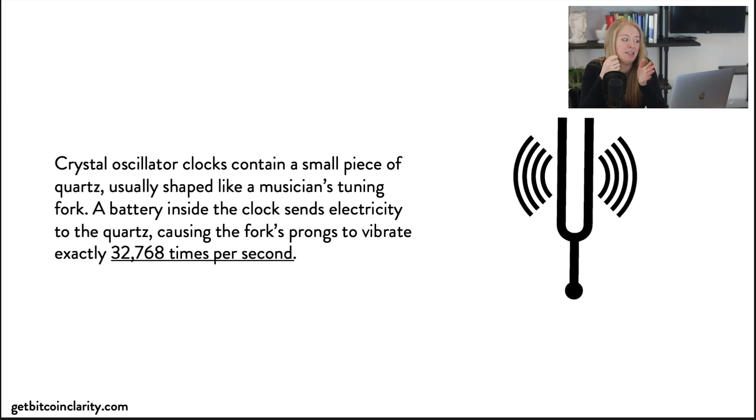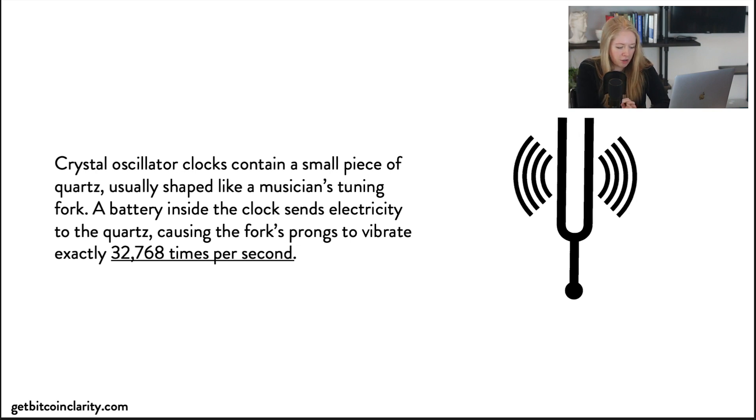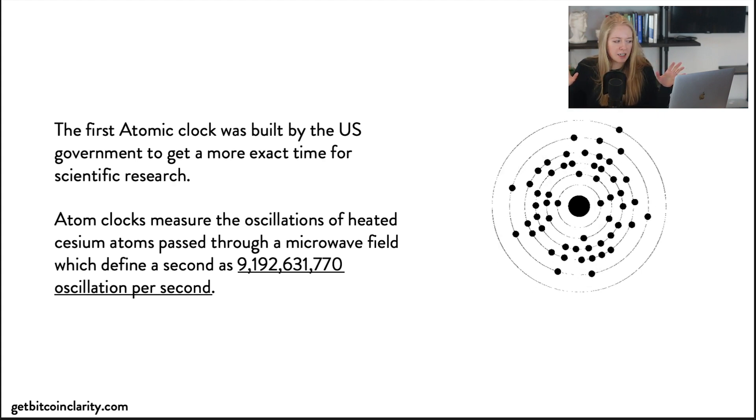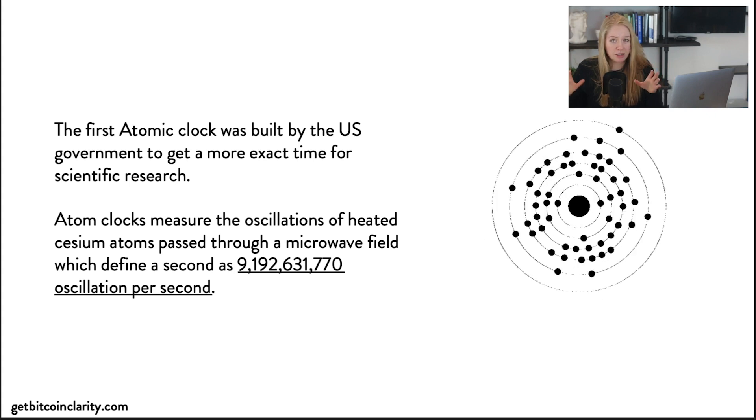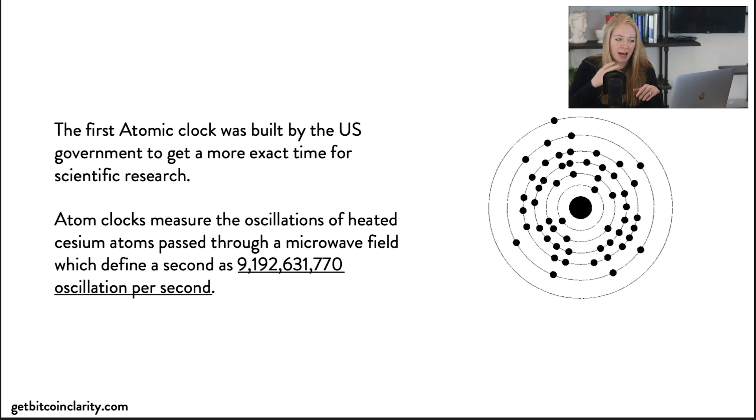The next one is an atomic clock. The atomic clock was invented by the U.S. government for research. The idea is that atomic clocks heat up cesium atoms that are then passed through microwaves, and that causes the cesium atoms to vibrate at a very consistent rate—something over nine billion. I'm not going to read that number because it's completely ridiculous.